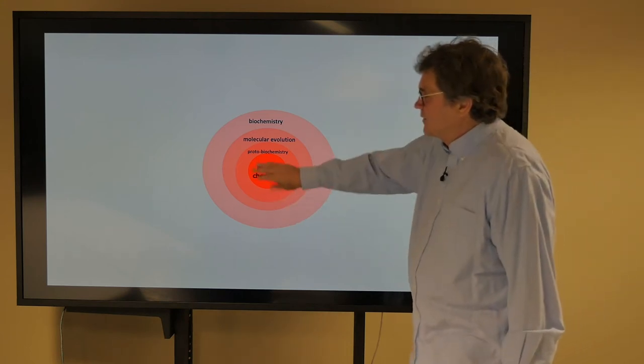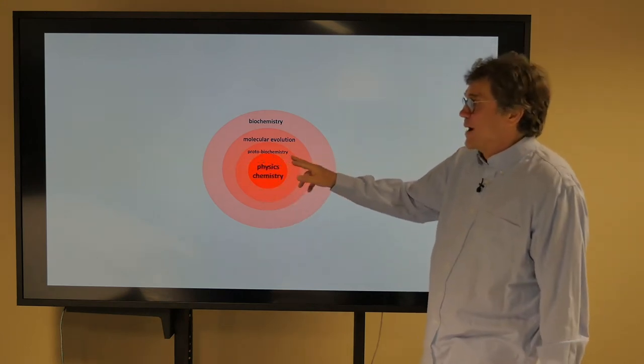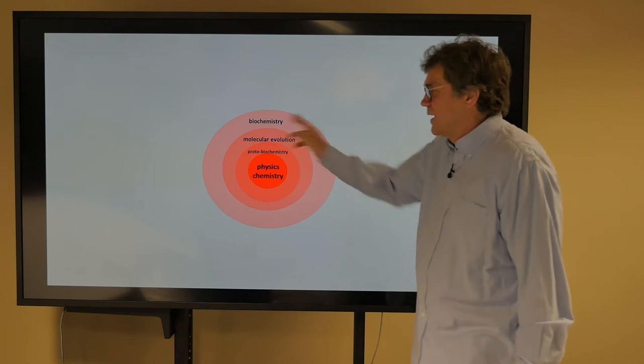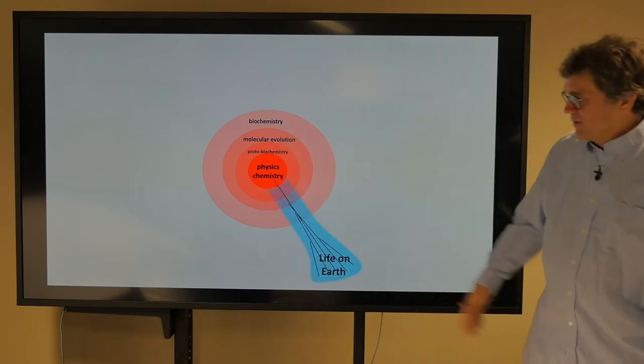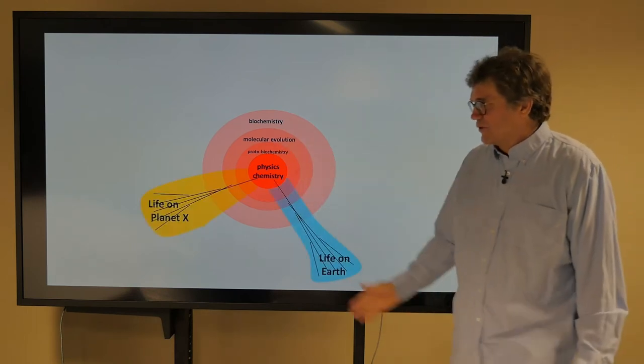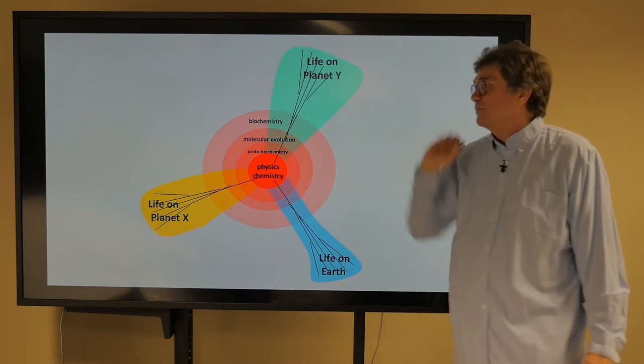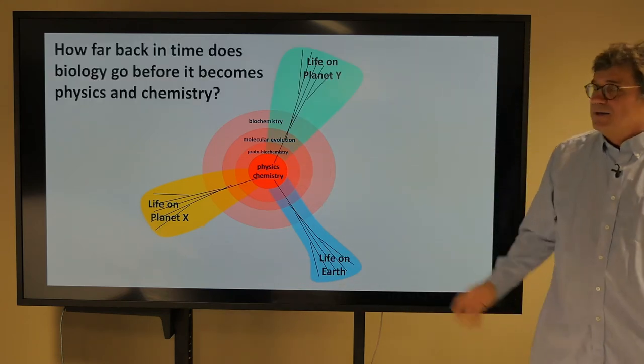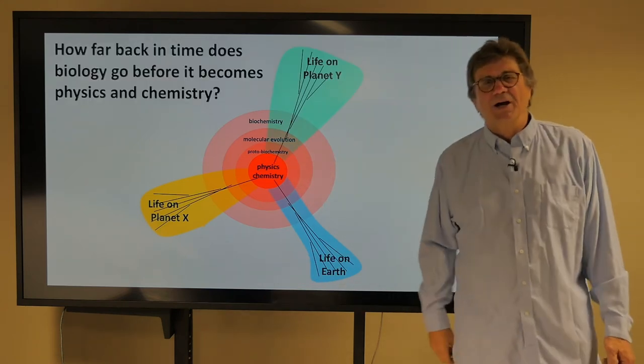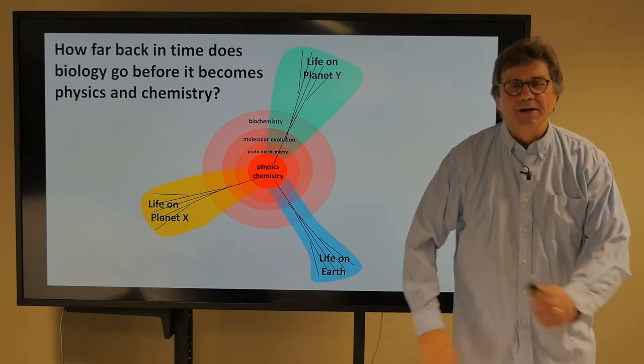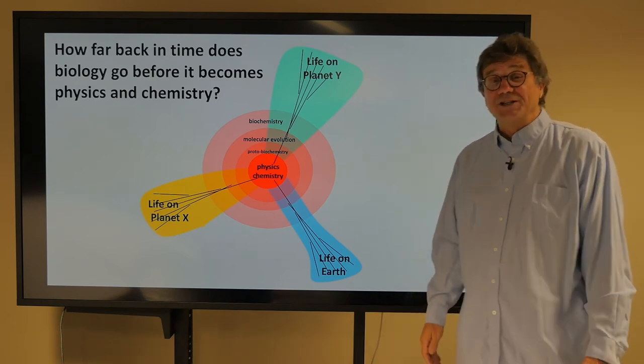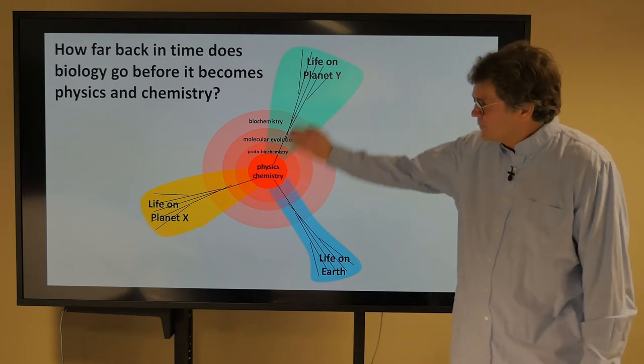So looking at that common core again, physics and chemistry, then proto-biochemistry, molecular evolution, biochemistry. And so life on Earth evolved from physics and chemistry. Life on planet X did the same. Life on planet Y did the same. And the question is, what's the time scale in this diagram? How far back in time does biology go before it becomes physics and chemistry? What's the time scale?